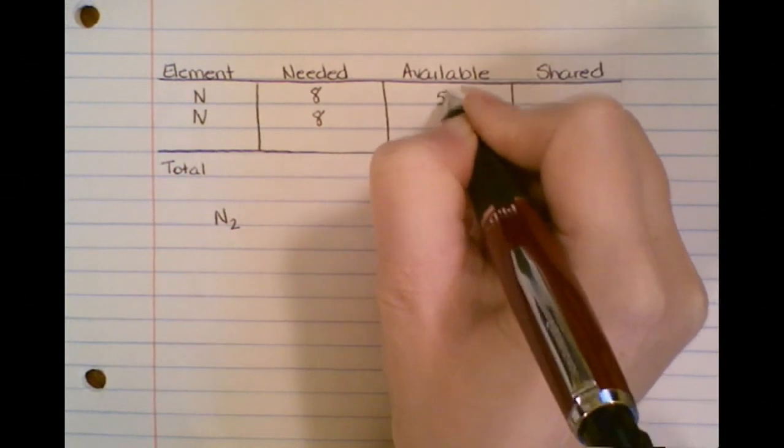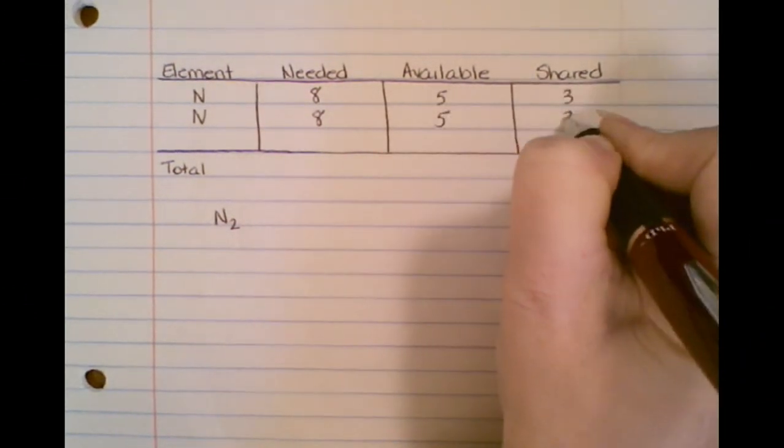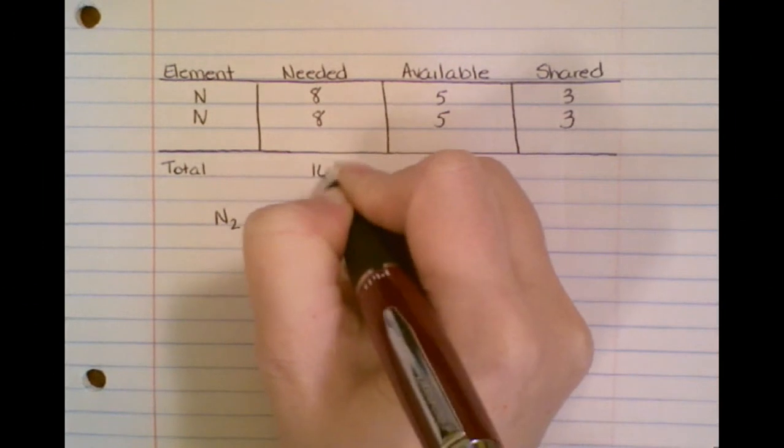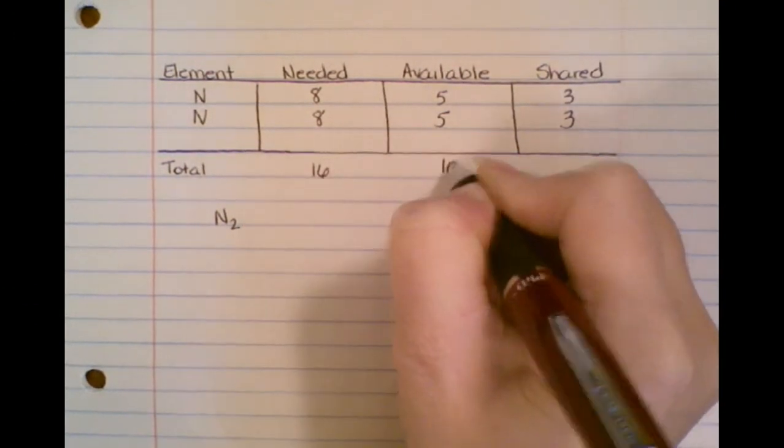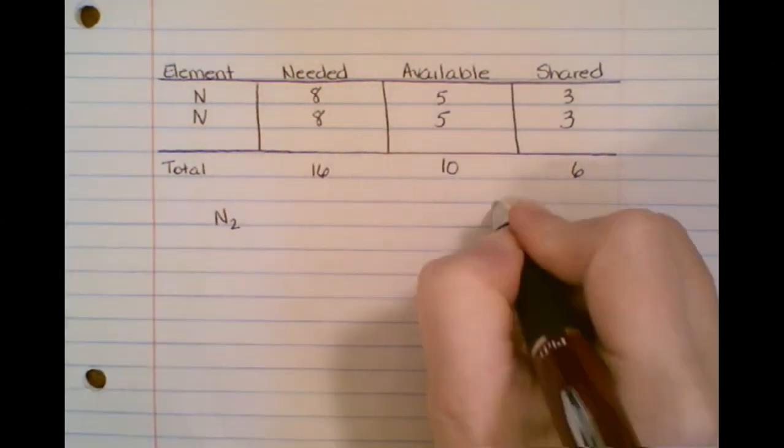We only have five and five. So this is three and three. So this is sixteen, ten, and six. Now six are shared, so how many bonds am I going to have?